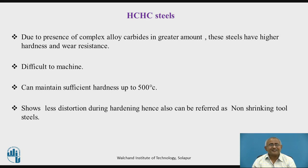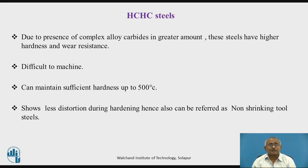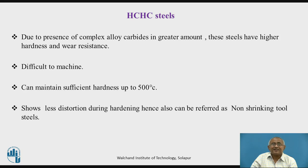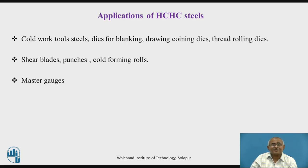That is why this steel is supplied in the spheroidized condition, and after machining it shall be oil hardened and tempered. It can maintain sufficient hardness even up to a temperature of 500 degrees Celsius if needed. It shows less distortion during hardening, and hence in some cases it is referred to as non-shrinking tool steel — another name and synonym for HCSC tool steel.